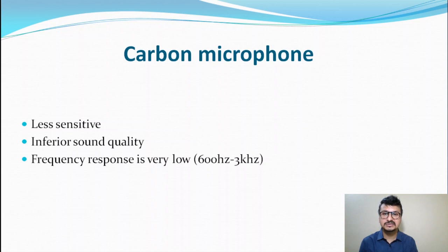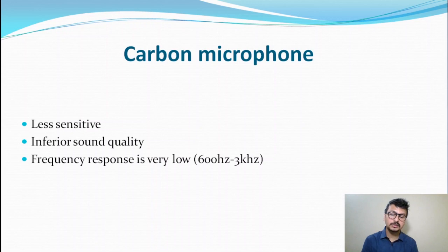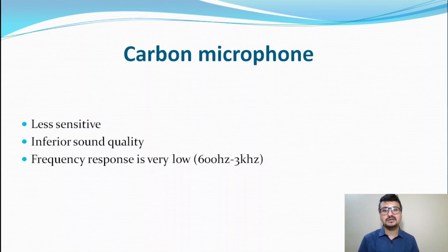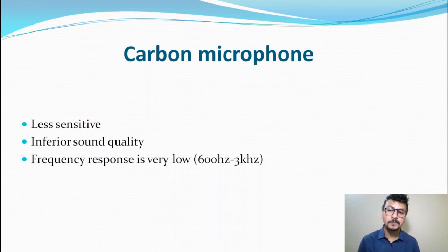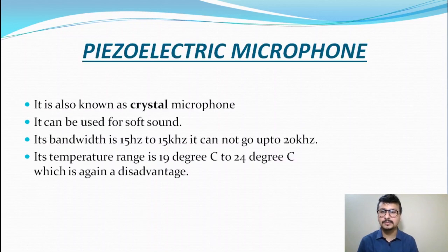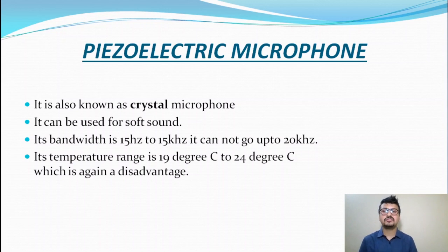The carbon microphone has less sensitivity and is inferior in sound quality. Its frequency response is very low, ranging from 600 Hz up to a maximum of 3 kHz. Despite inferior sound quality and less sensitivity, these microphones are still used.